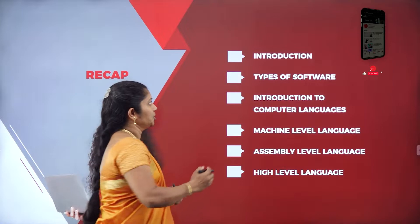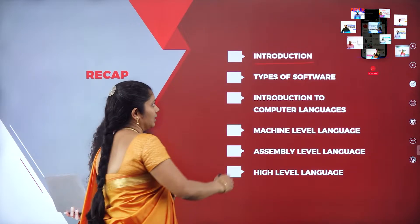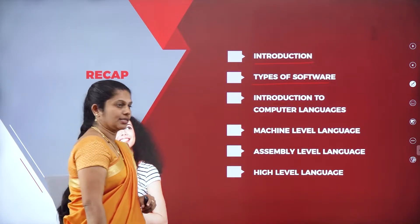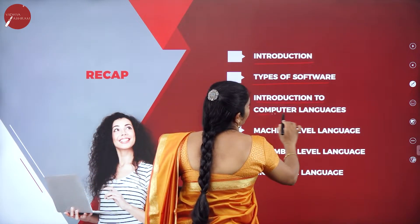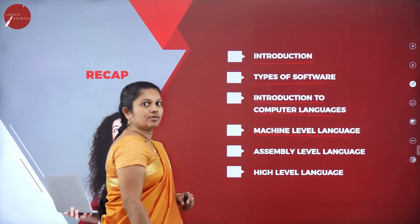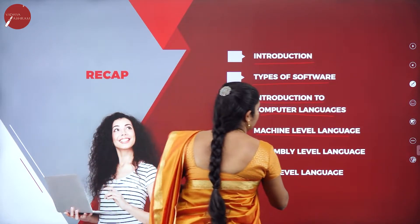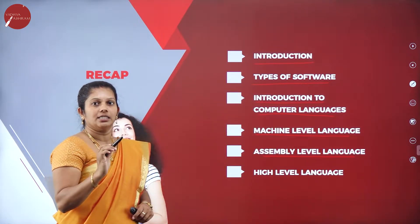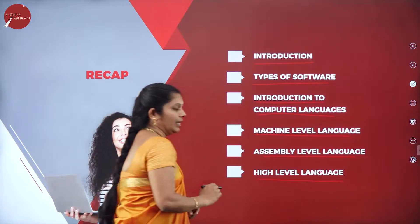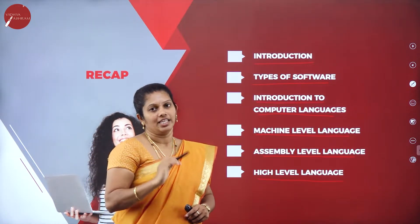In the previous session, you have come to know regarding the introduction of software, then types of software — that is application software and system software — introduction to computer languages, under that machine-level languages where all instructions are written in the form of zeros and ones, then assembly-level languages where instructions are written using mnemonics, then high-level languages written in general English format.